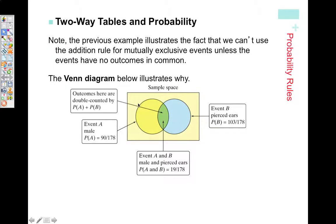Here's a Venn diagram showing us what's happening in this problem. One of these circles represents event A, one represents event B. The outcomes in here are counted twice if we add together. We're counting them from the yellow circle and we're counting them from the blue circle. Those get counted twice and we don't want that. We only want 19 out of 178 to be in here.